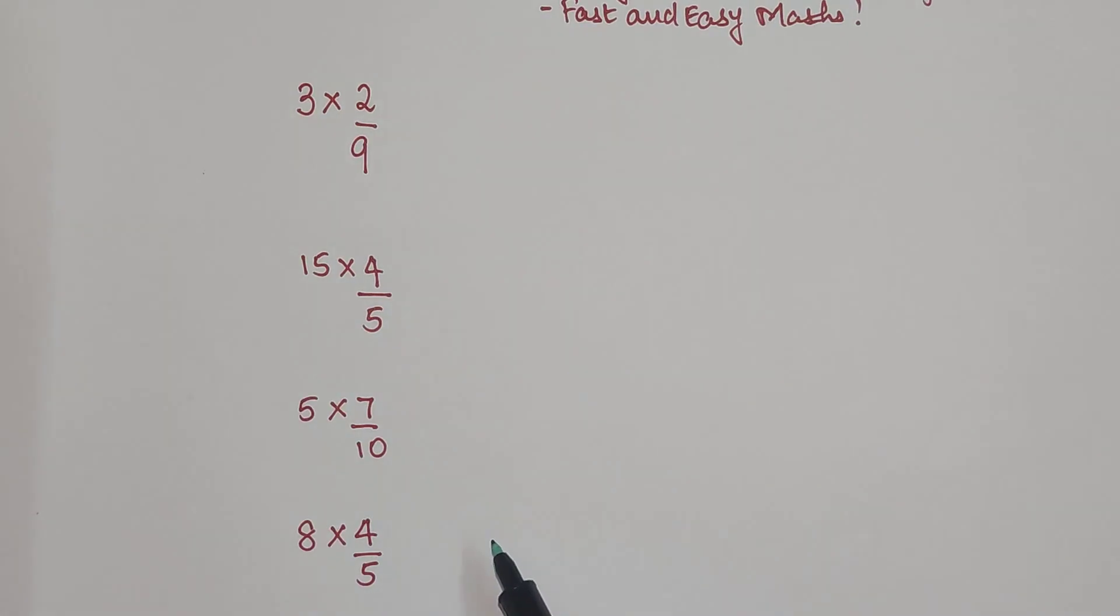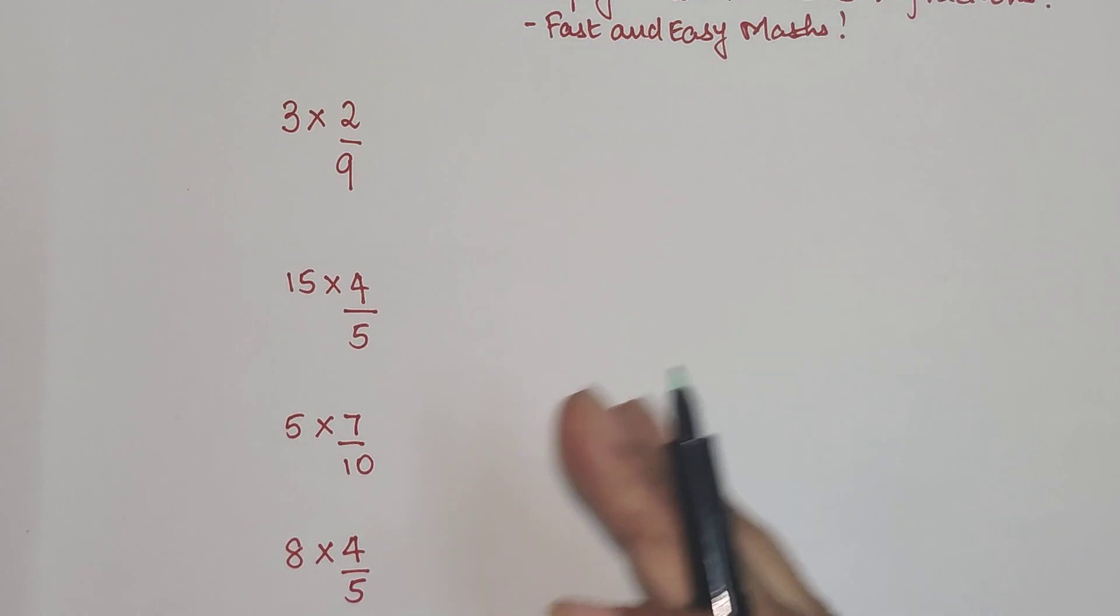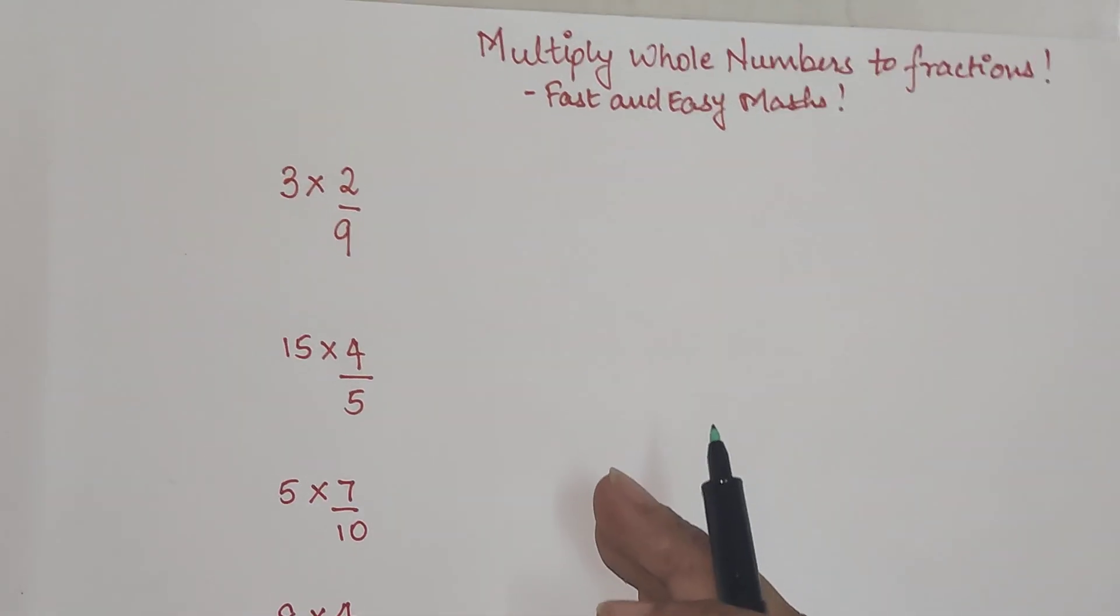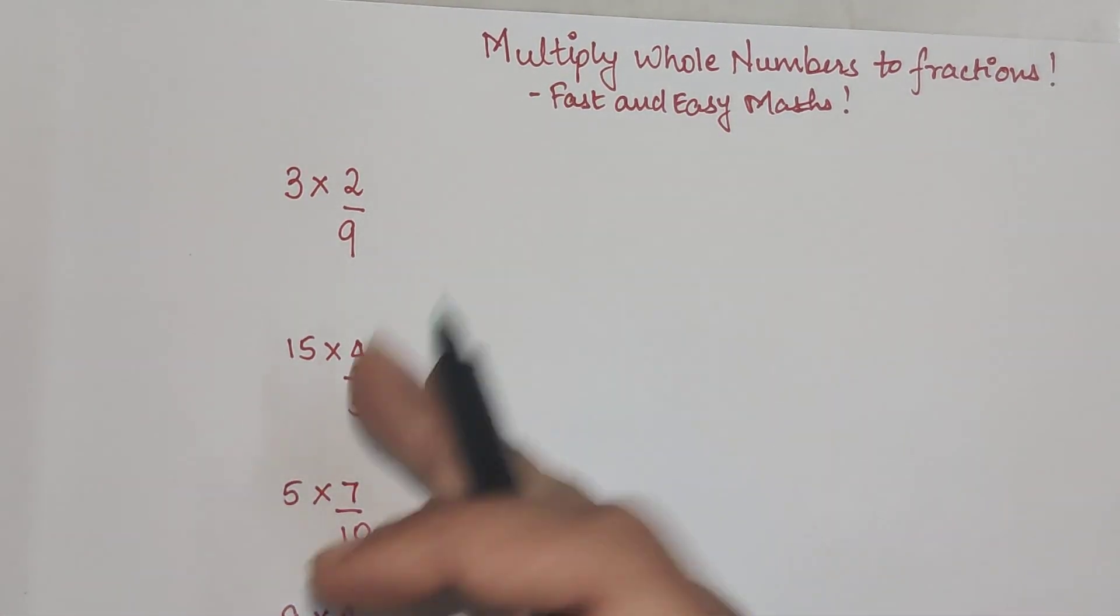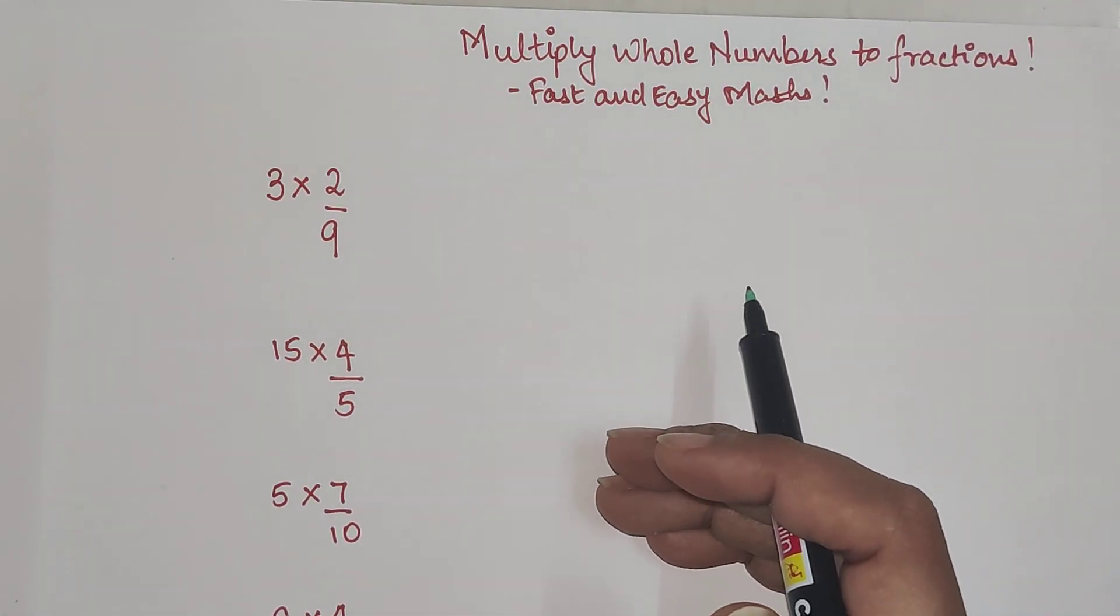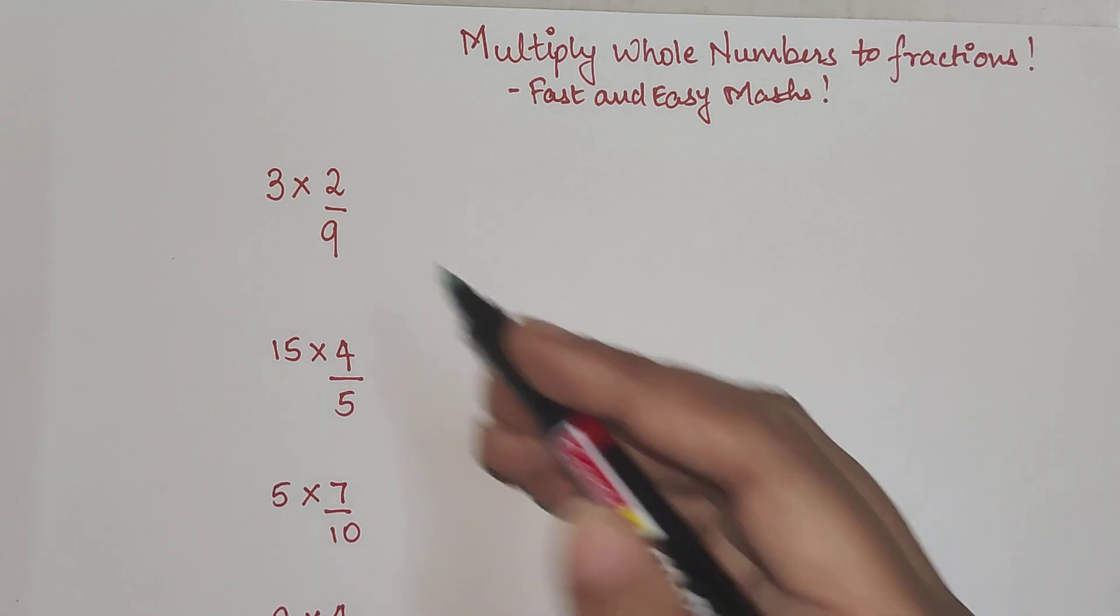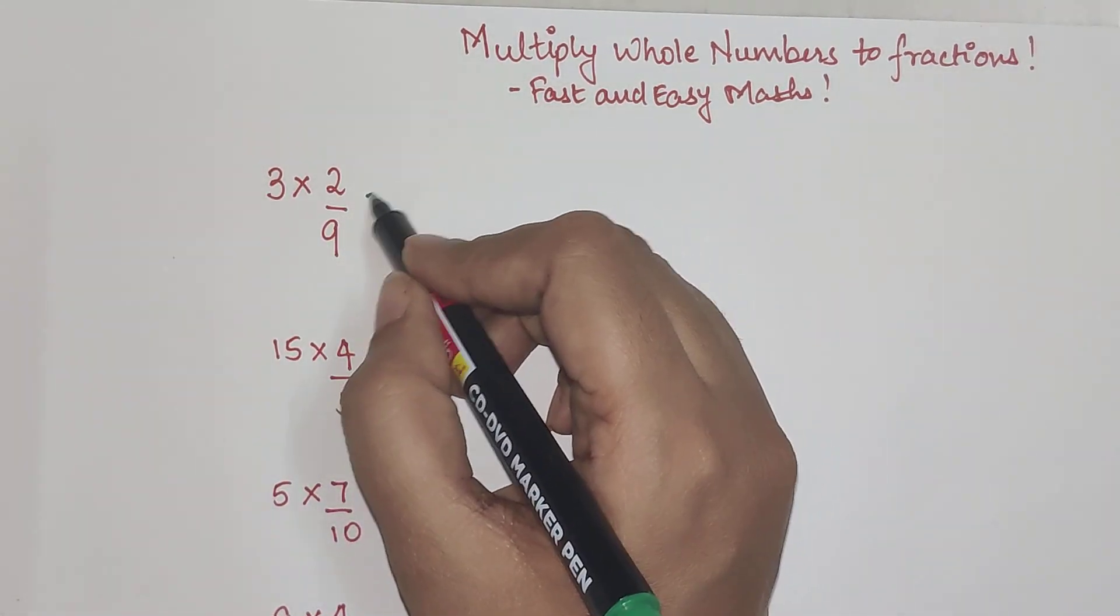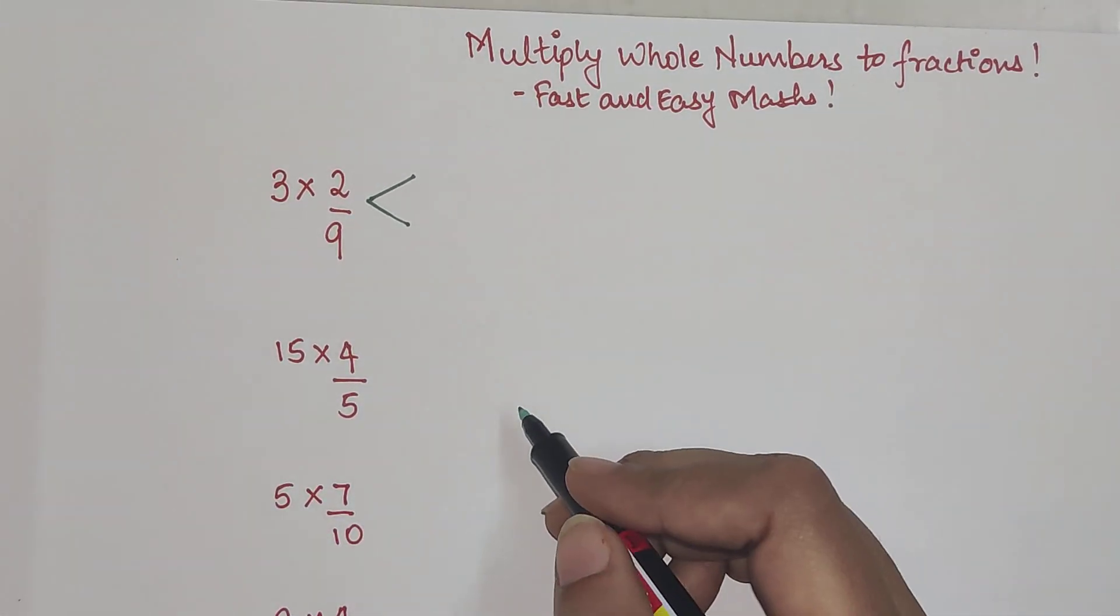First we will start with the easier ones and then later on we will do more than two fractions, where we will have one whole number and then more than one fraction which we are supposed to multiply. Now see, understand there are two ways to do this.